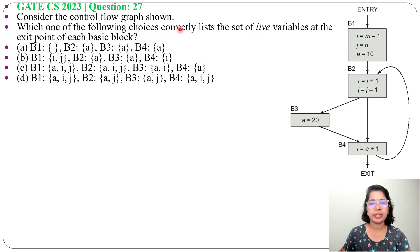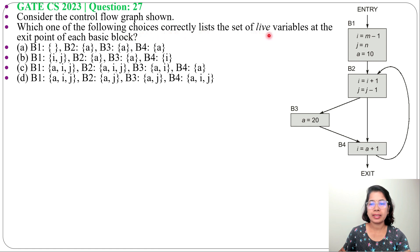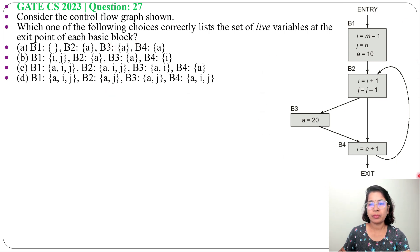Let's solve one previous question of compiler design. This question was asked in GATE CS2023, question number 27. Consider the control flow graph shown. Which one of the following choices correctly lists the set of live variables at the exit point of each basic block? Four options are given. This is our control flow graph.